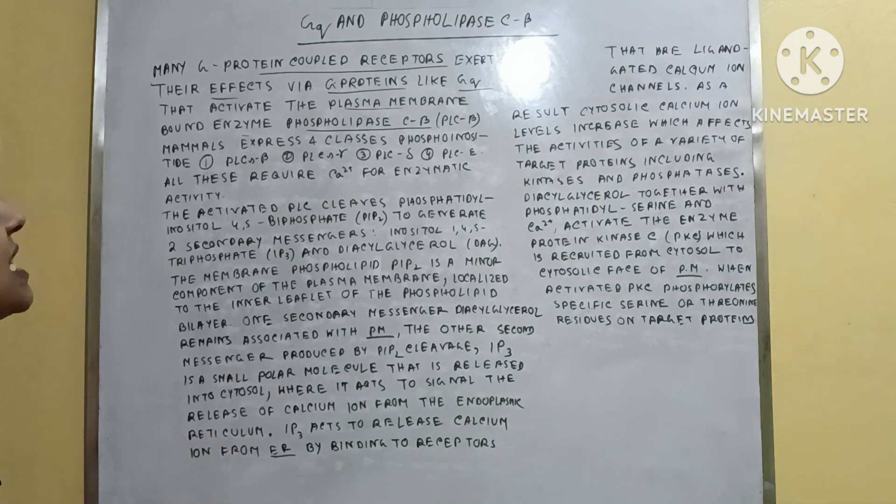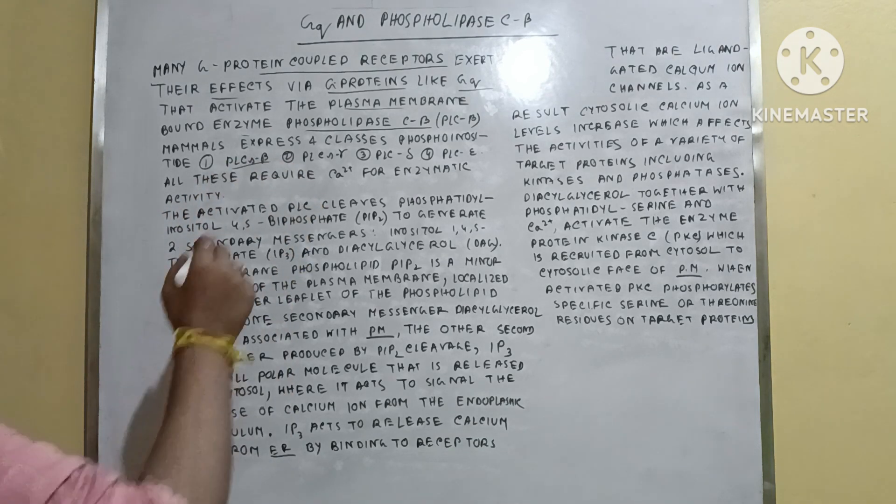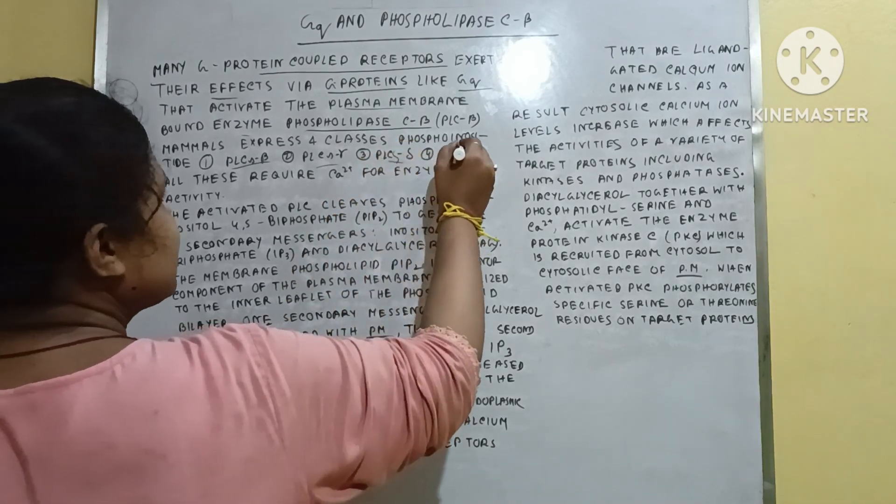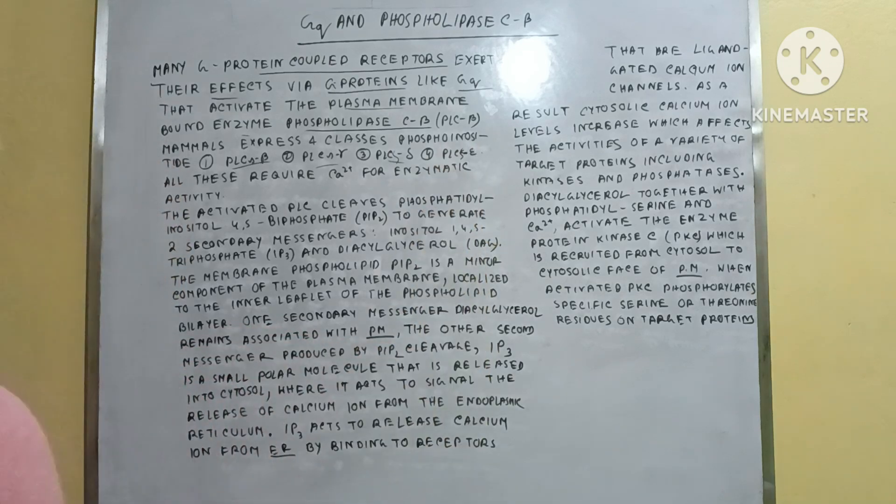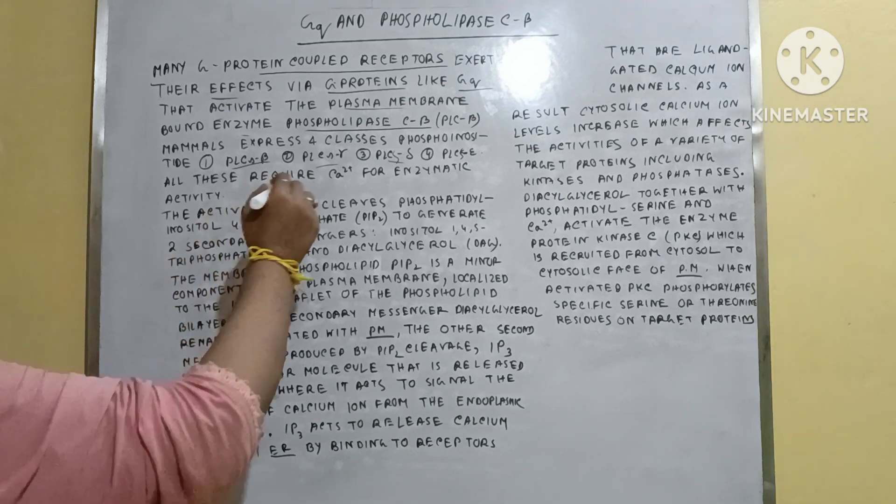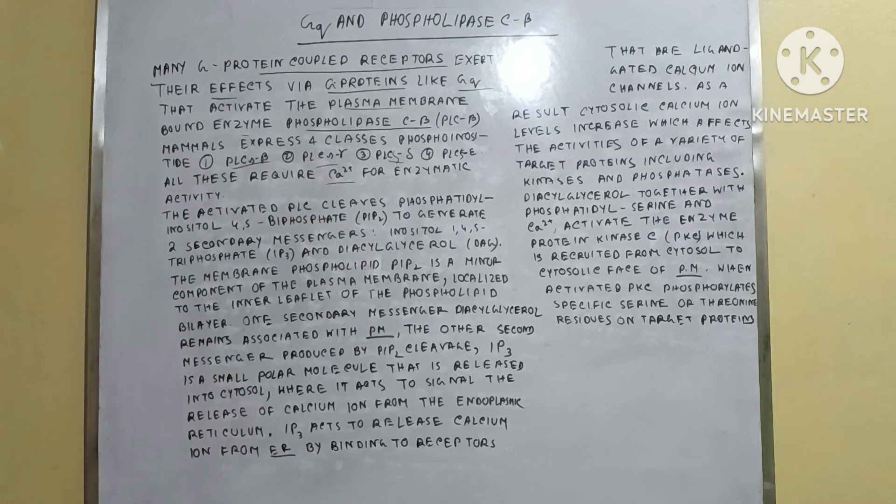There are four kinds of PLC in all mammals: PLC beta, PLC gamma, PLC delta, and PLC epsilon. All these PLCs require calcium ion for enzymatic activity. If calcium is absent in the cytosol, the PLCs and these enzymes are not activated. Calcium ion must be present for the activation of the PLCs.